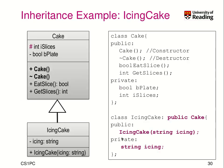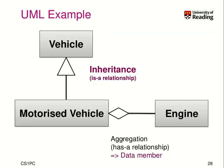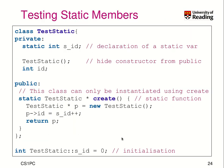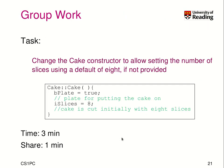However, if we go back to the declaration of cake, it would have been possible in our implementation of the cake constructor to say colon, bplate equals true, then comma, iSlices equals 8. So the body here would basically be empty. That would then be an initializer list for the implementation of the cake constructor.